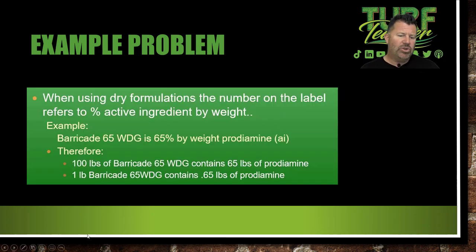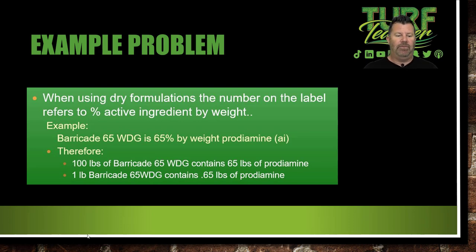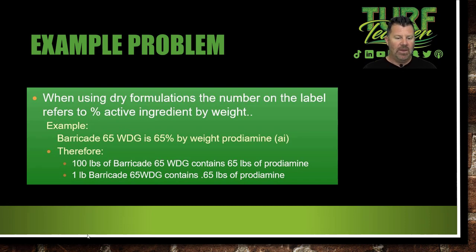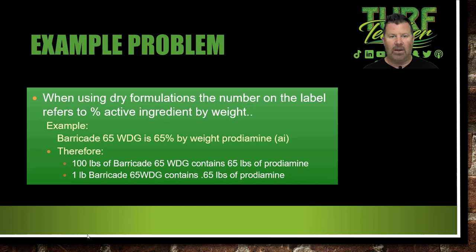Let's talk a little bit about beer and comparing it to Barricade. How much would an application of Barricade 65 water dispersible granulars cost for an 8,000 square foot home lawn if the labeled rate is one pound active ingredient per acre and Barricade 65 WDG is $39.95 per pound? These are typical problems we're going to see every single day in lawn care — we're putting out Barricade in the springtime. When using dry formulations, the number on the label refers to the percent active ingredient by weight. Barricade 65 WDG is 65% by weight prodiamine active ingredient. Therefore, 100 pounds of Barricade 65 WDG contains 65 pounds of prodiamine, and 1 pound of Barricade 65 WDG contains 0.65 pounds of prodiamine.